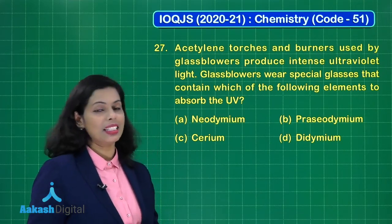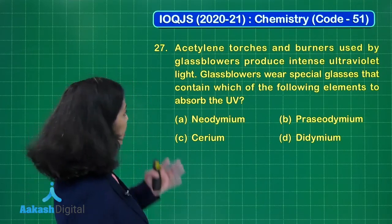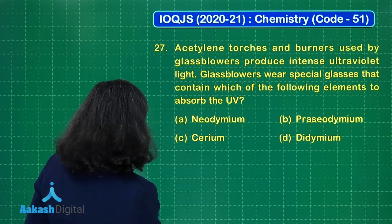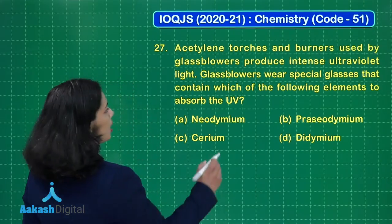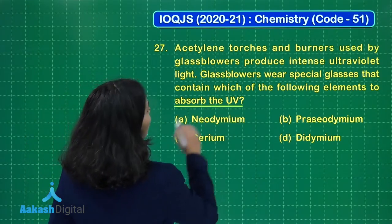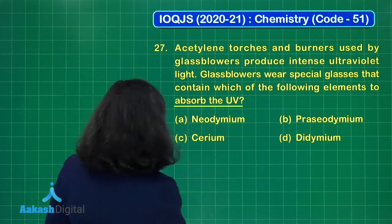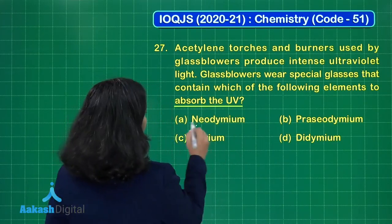Glassblowers wear special glasses that contain which of the following elements to absorb the UV radiation. This is basically an application based question, and if we are talking about the element which is actually absorbing UV radiation, it is neodymium. This is correct.